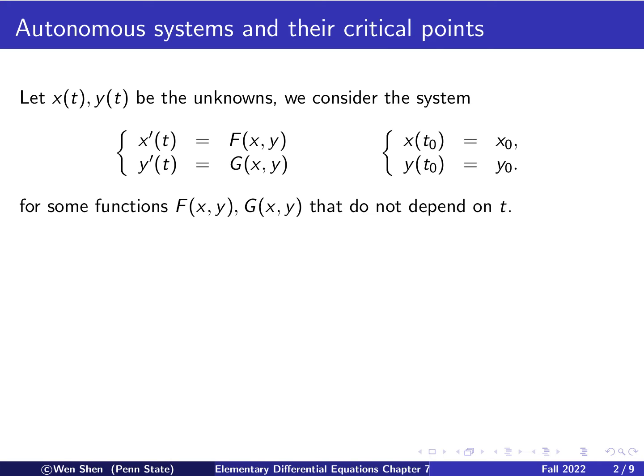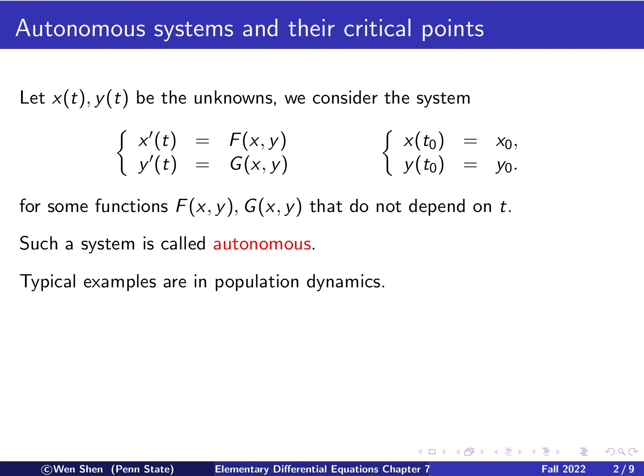This means the evolution of the system only depends on the state of the system — what the values of X and Y are — and it doesn't matter at what time it happens. So if it happens today or tomorrow, it evolves in the same way. There is also an initial condition given at initial time t0 as X0 and Y0. A system in this form is called autonomous. Typical examples very well studied in the literature are in population dynamics.